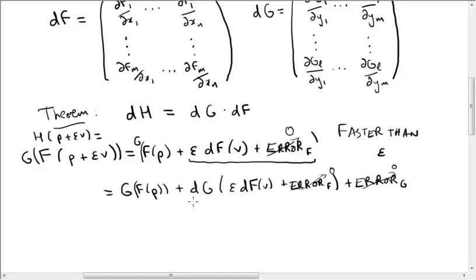Now by linearity of this matrix, dg, and how it acts on vectors, we know that this is g of f of p plus epsilon dg df of v. So this is the composite of the two matrices, or the product of the two matrices acting on this vector v.